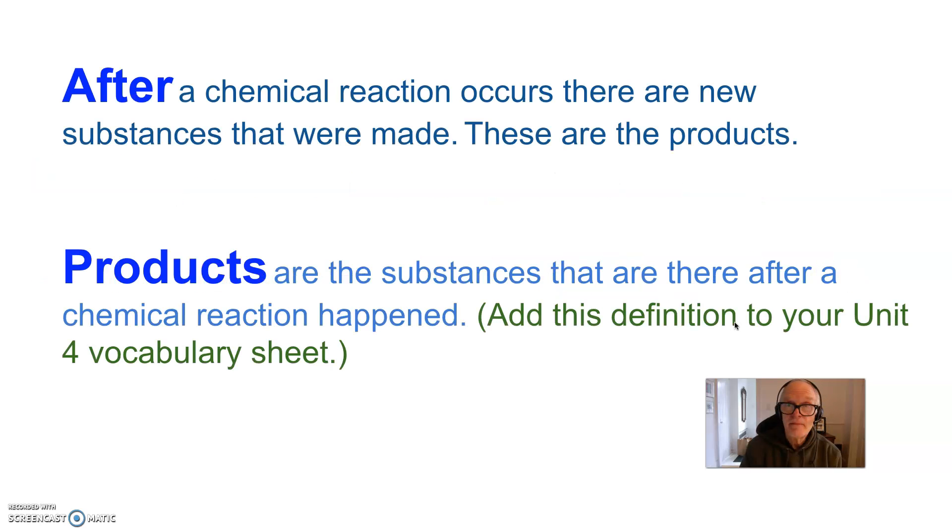After the chemical reaction is over, there are new substances that were made during the reaction and these are the products. The products are the substances that are there after a chemical reaction happened.